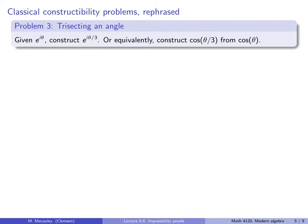Problem three, trisecting an angle. Formally, this says, given e to the i theta, construct e to the i theta over 3.